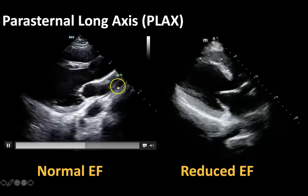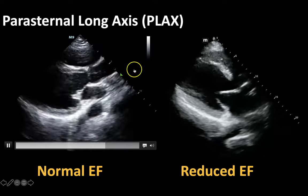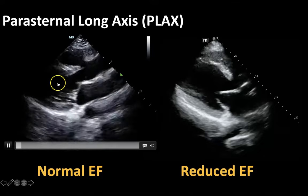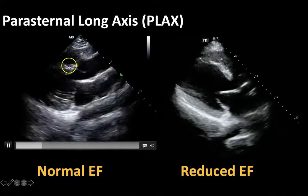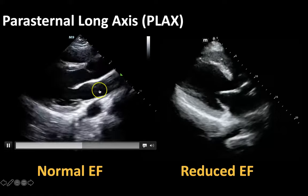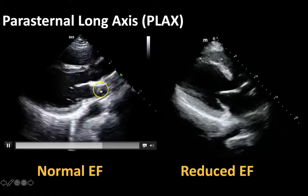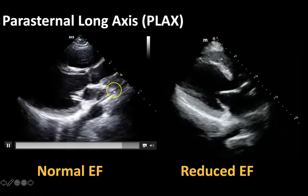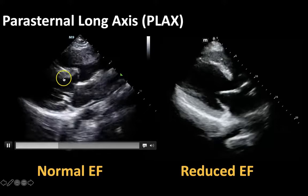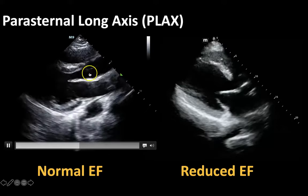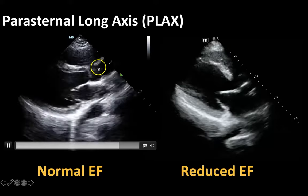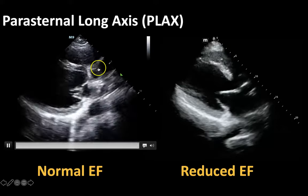So your basic anatomy. This is the long axis view of the heart, so you see most of the chambers. This is your left atrium here, this is your mitral valve, here's your left ventricle, your aortic valve, and your aortic outflow tract here.